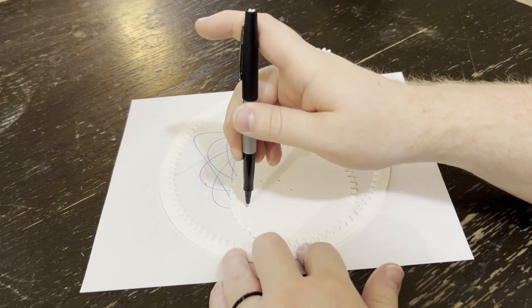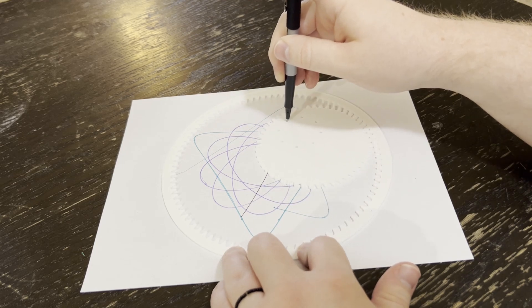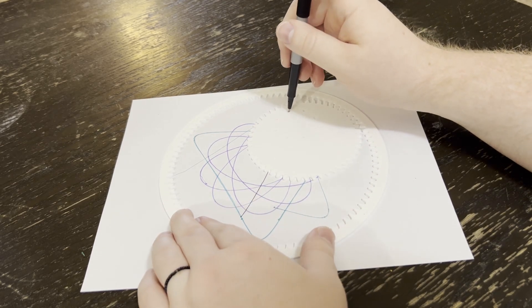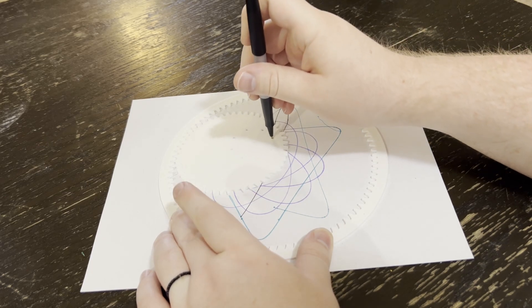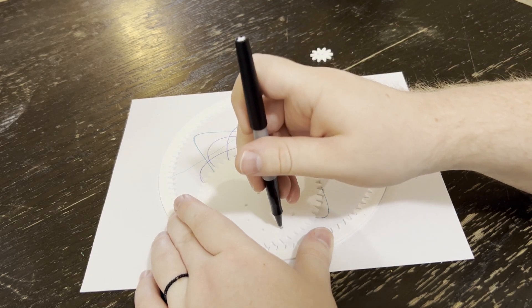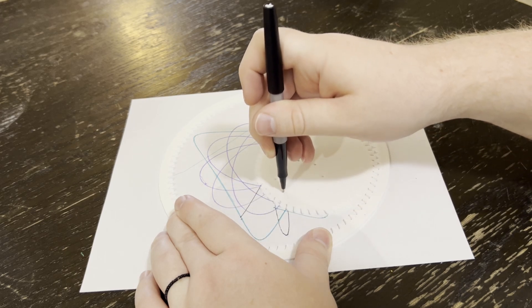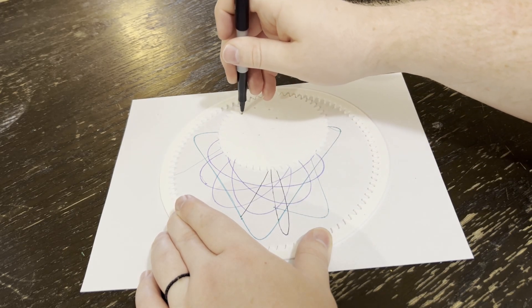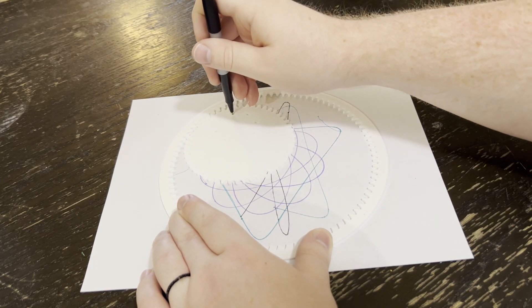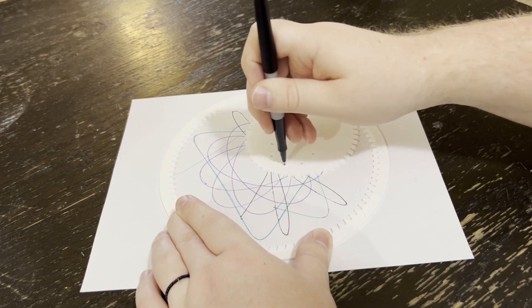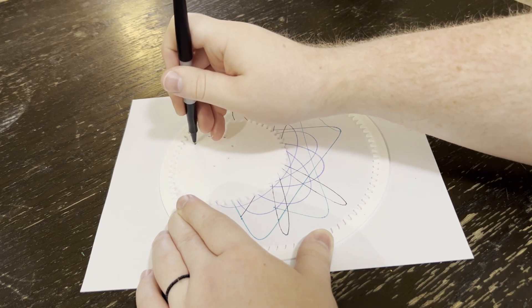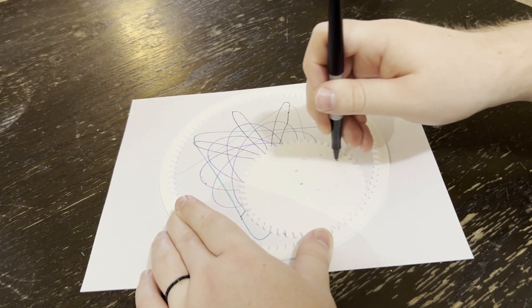A really important consideration when you're making a spirograph, and something that I kind of neglected when I was making mine, is the number of teeth in the different gears. The way that gears work is they will return to their original positioning every x number of turns, where x is the highest common multiple of the two gears number of teeth. So in my case, my sun gear has 90 teeth, and my planet gear has 50. So the highest common multiple of both 90 and 50 is 10, which means that every 10 spins, I will revert back to my original position.